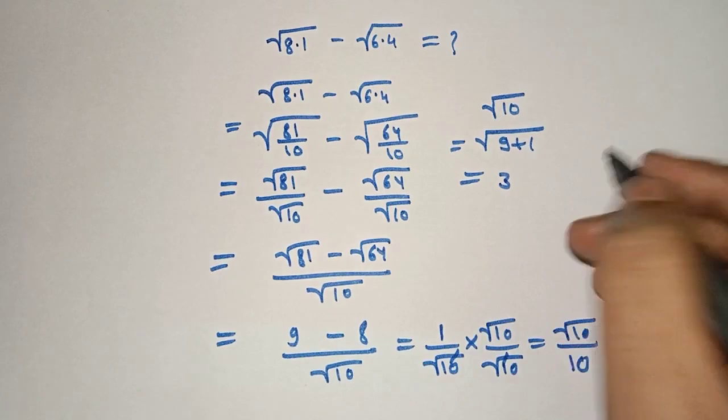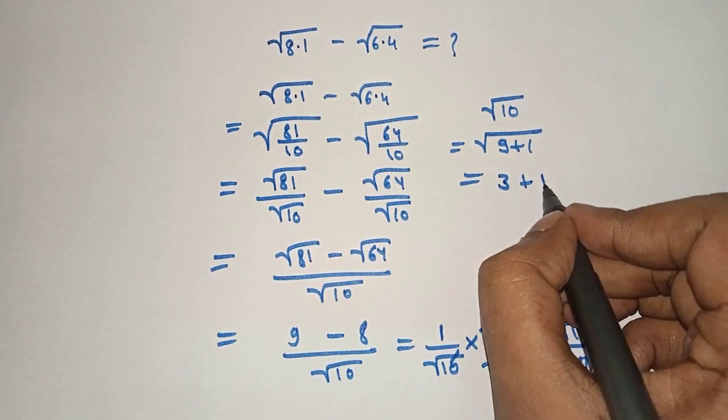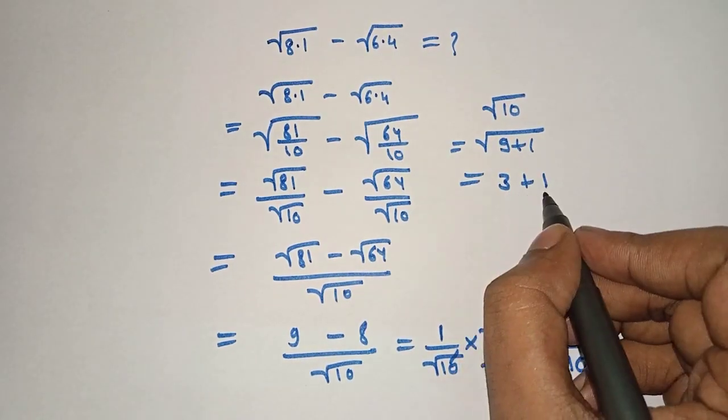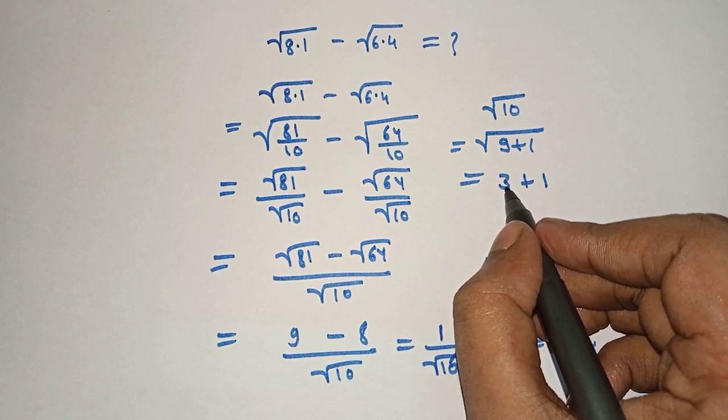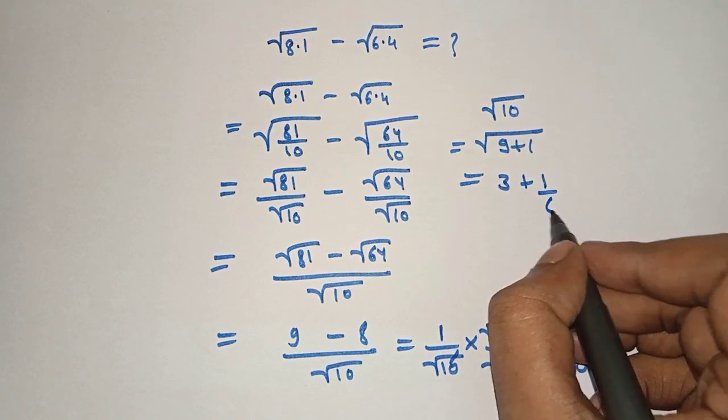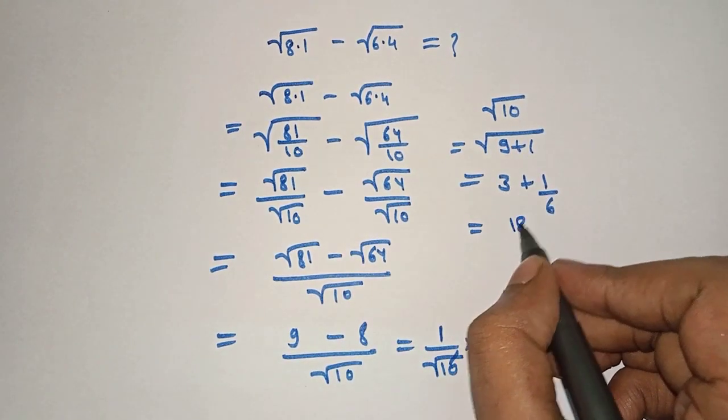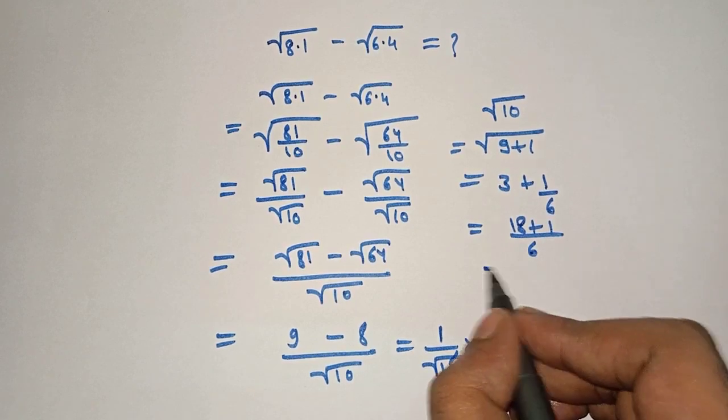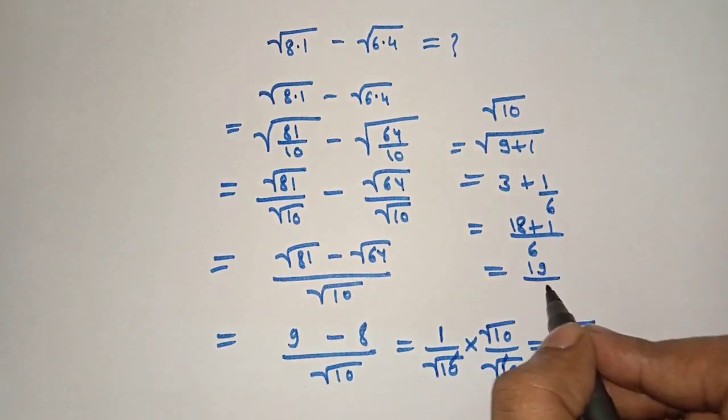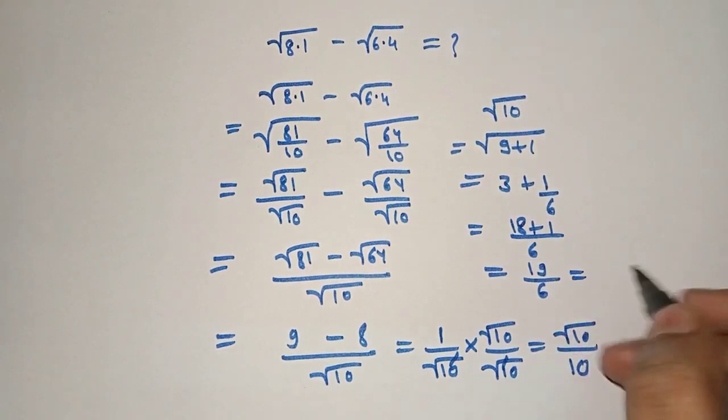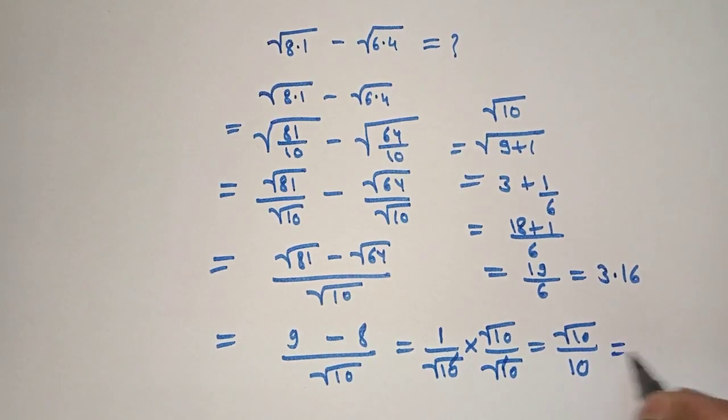Now we will take square root of 9, which is 3, and add 1 divided by double of this number. Double of 3 is 6. Therefore 3 plus 1 by 6: 3 times 6 is 18, plus 1 equals 19 by 6, which equals 3.16. Therefore the value of square root of 10 is 3.16.